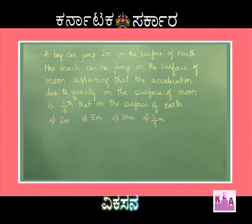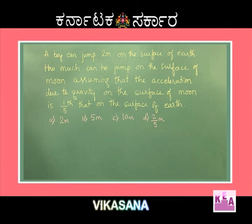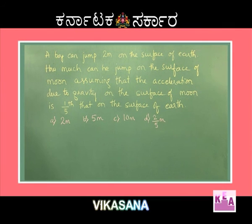Options: A — 2 meters, B — 5 meters, C — 10 meters, and D — 2 by 5 meters.